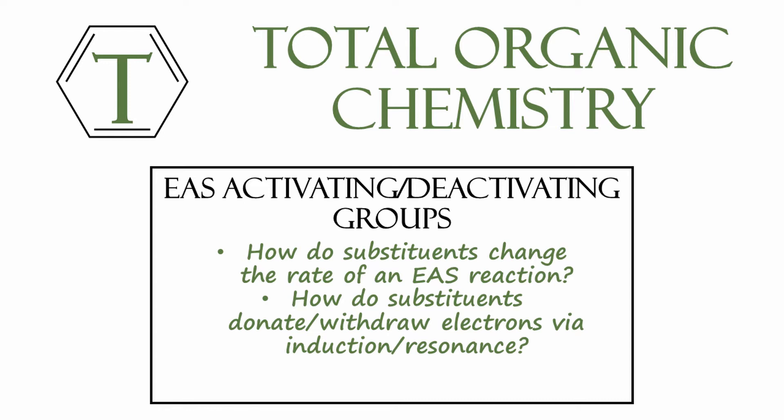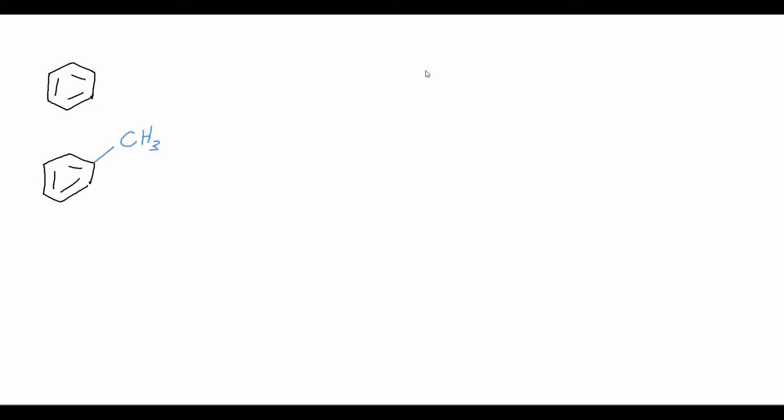If you need an introduction to electrophilic aromatic substitutions in general, please check out the linked video. Up until now, we've been talking about EAS reactions on just benzene without any substituents. What happens if we add a substituent to this ring, such as a methyl group? Adding that methyl group to benzene gives us toluene. The question we'd like to answer is: will toluene react in an EAS reaction faster or slower than unsubstituted benzene?